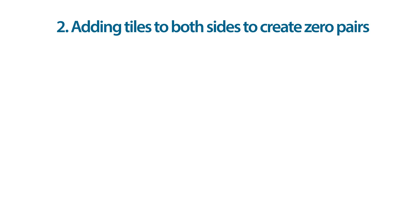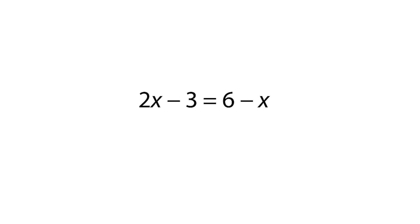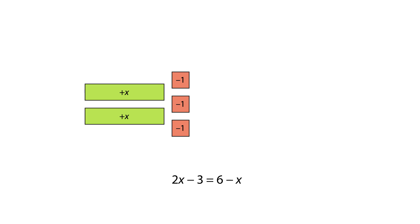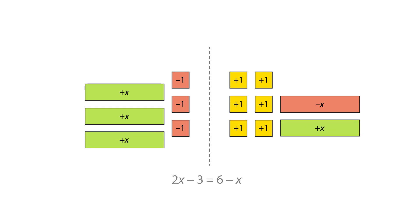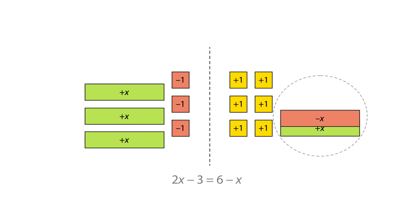Now let's look at using the tiles to create zero pairs. The equation 2x minus 3 equals 6 minus x involves negative terms, so the red side of the tiles can be used. Where there is a negative x, we can make a zero pair by adding x to both sides. The zero pair has no value and can be removed.